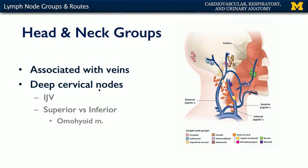Lymph nodes of the head and neck are largely associated with veins. Along the external jugular vein we can see some of the superficial cervical lymph nodes, and around the internal jugular vein, the IJV, we see some of the deep cervical nodes.